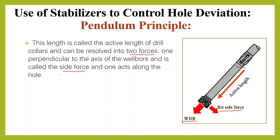Some pendulum assemblies may also use an under-gauge near-bit stabilizer to moderate the drop rate. If we need to achieve a moderate drop rather than a high drop, we can place an under-gauge near-bit stabilizer — not a full-gauge one — below the first stabilizer. This will achieve less tendency to deflection and result in a moderate drop rate.